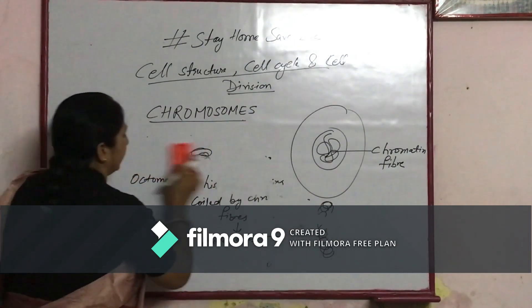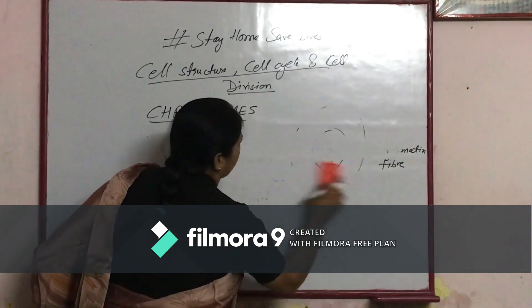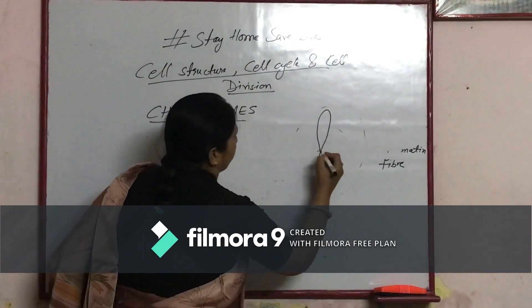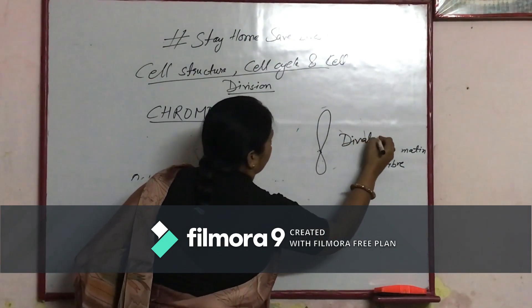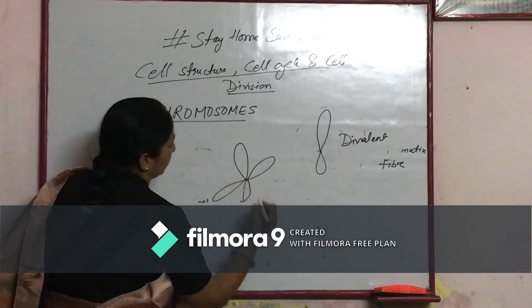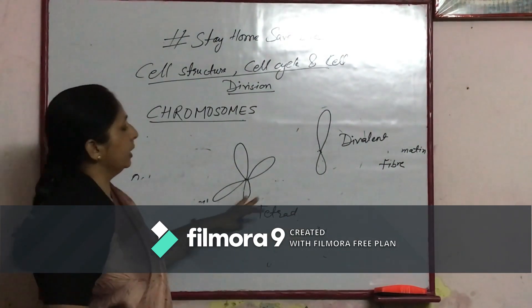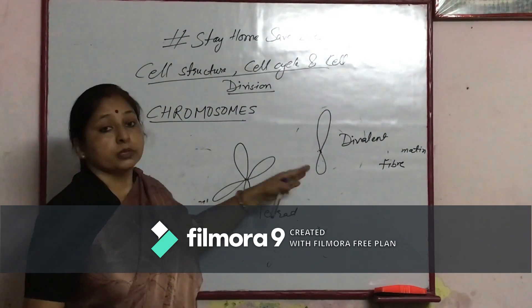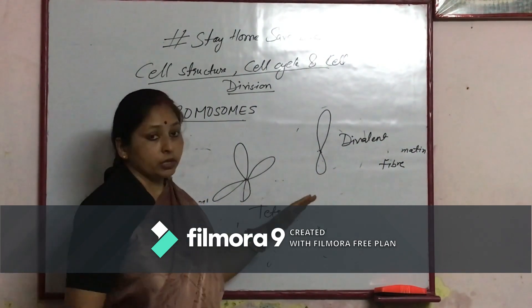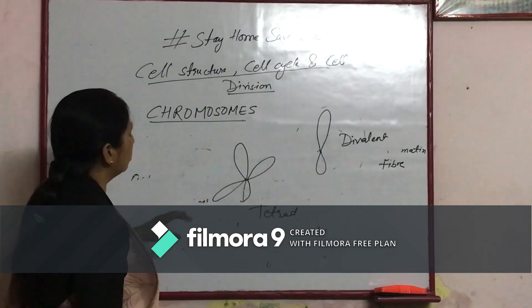If a chromosome is having only two arms, then it is called a divalent structure. If it forms another type of structure, then it is called a tetraut. Chromosomes are usually in the divalent form at the time of cell division, when they pair with another homologous chromosome and form the tetraut.